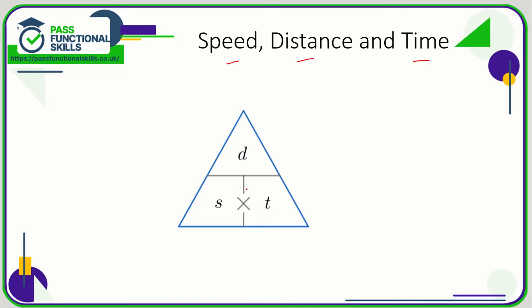The way it works is: if you want to work out speed, hide speed — speed is therefore distance over time. If you want time, put your thumb over time — time is distance over speed. And if you want distance, hide distance — distance is speed times time.